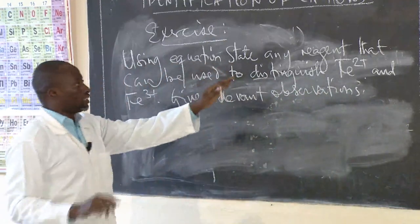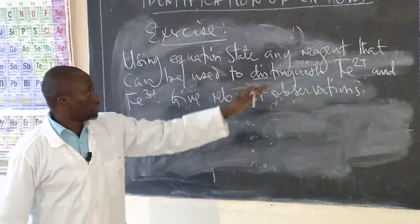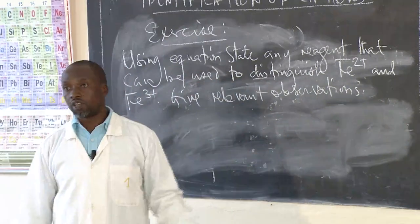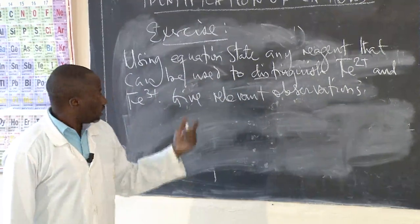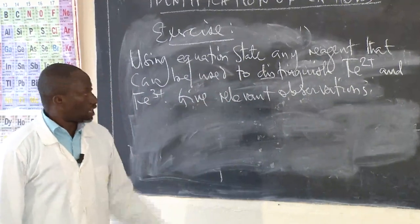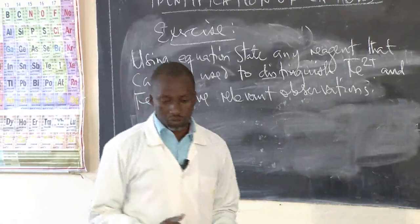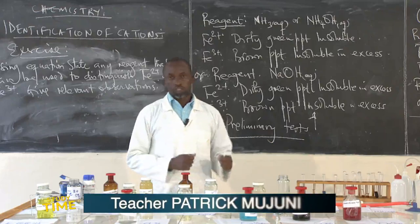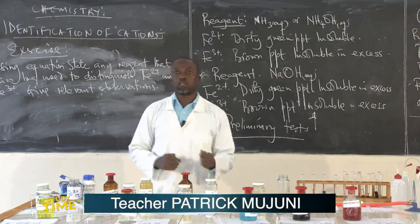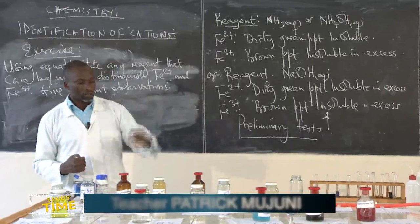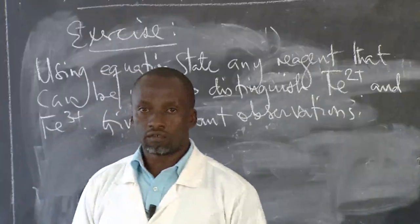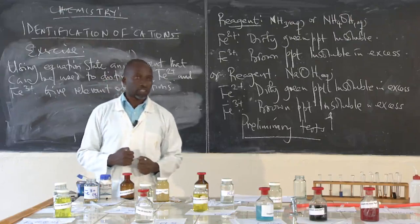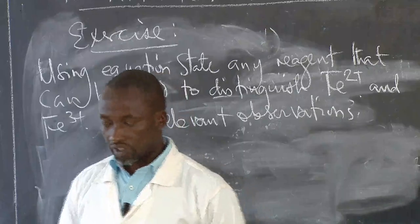Using equations, state any reagent that can be used to distinguish iron 2 and iron 3, give relevant observations, and answer that exercise. I wish to stop here for this time. The cations that we have not looked at, we'll also look at them in the coming lesson series. Thank you so much for listening and observing.